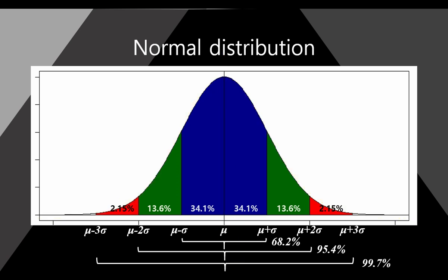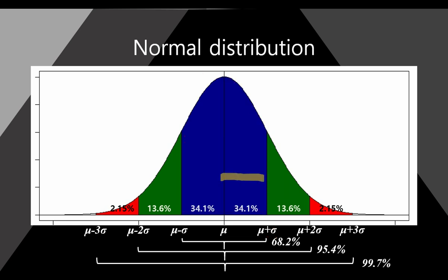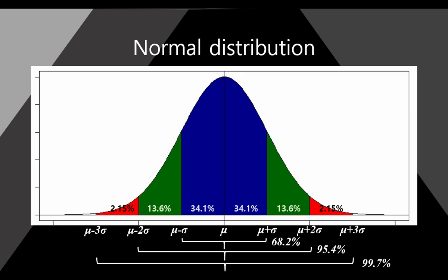One more: this distance is sigma — standard deviation. So from mean, one standard deviation on each side. This blue area is from mu minus one standard deviation to mu plus one standard deviation. And blue and green areas together are plus or minus two standard deviations from mean. Finally, three standard deviations cover the blue, green, and red areas.